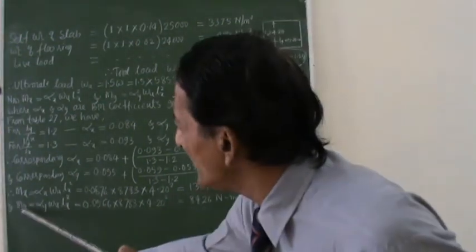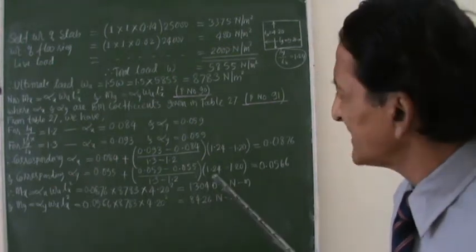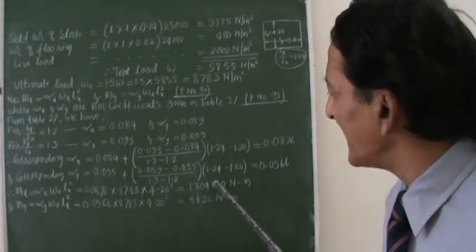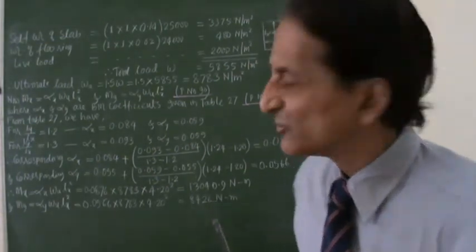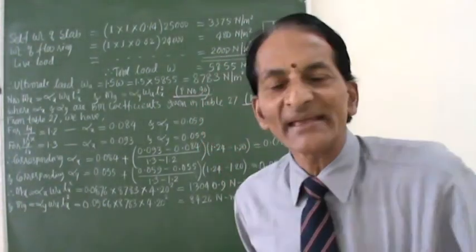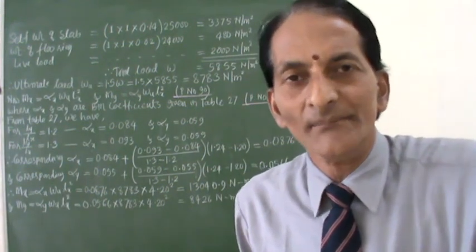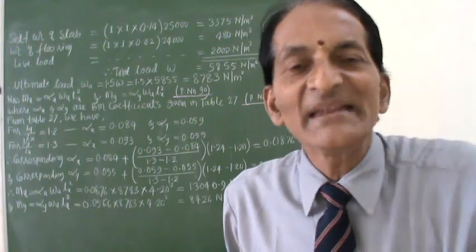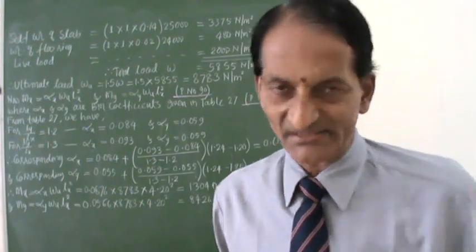And you have MY value now so much. So I have calculated MX and MY from this IS code. So now once I know MX and MY, I think I can easily start calculating your, what we call, this AST X and AST Y. Am I right now? So that part we shall see it in the next class. Thank you very much.